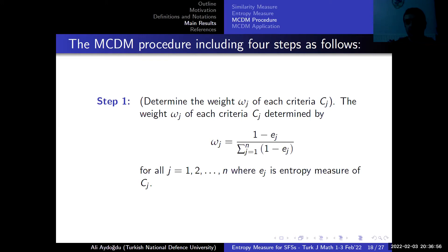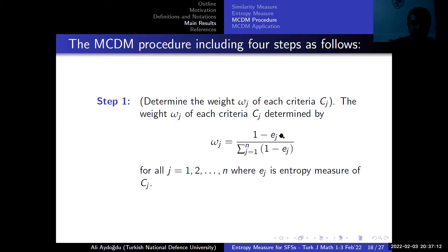In the first step, we determine the weight of each criterion. Since higher entropy indicates less important attributes, we obtain the weight of each criterion by transforming entropy values to divergence values via 1 minus entropy, and then normalizing to obtain each criterion's weight using the corresponding formula.